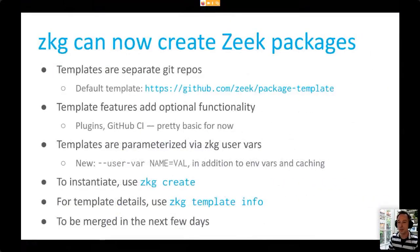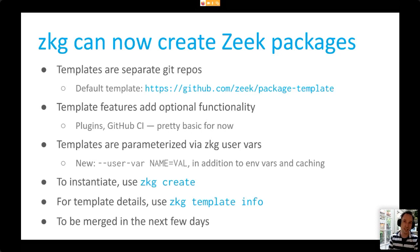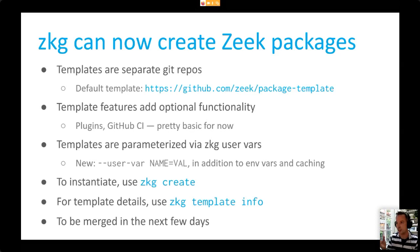This is still in code review and should go in within the next few days. It might take a little bit longer until you see it appear with Zeek itself depending on when the next release goes out. But we always release ZKG versions independently as standalone versions through pip. The moment this is merged, you'll be able to use it. Just look out for ZKG create or that template namespace, and when it's there you'll be able to use this.